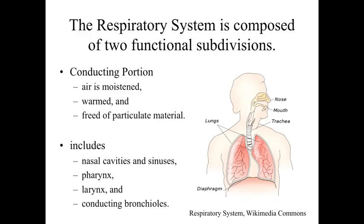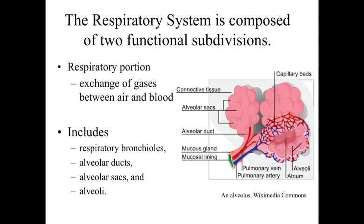Within the conducting portion, we moisten the air, warm it, and ideally free it of particulate material, minimizing harmful properties that could affect the vulnerable regions deep within the respiratory tract. The conducting portion includes the nasal cavities and sinuses, pharynx, larynx, bronchi, and conducting bronchioles. The goal is to get air down to the respiratory portion where actual gas exchange occurs between inhaled or exhaled air and the blood.